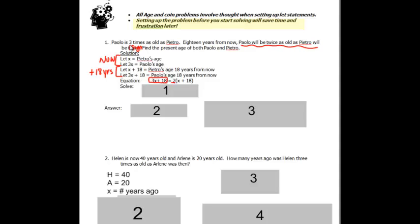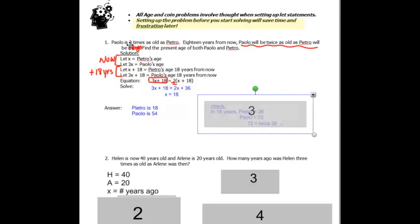The equation then comes from this information. In eighteen years, Paolo will be twice as old as Petro is then in eighteen years. So to solve it, we're going to go ahead, distribute, solve, and we get that Petro is eighteen and Paolo is fifty-four.